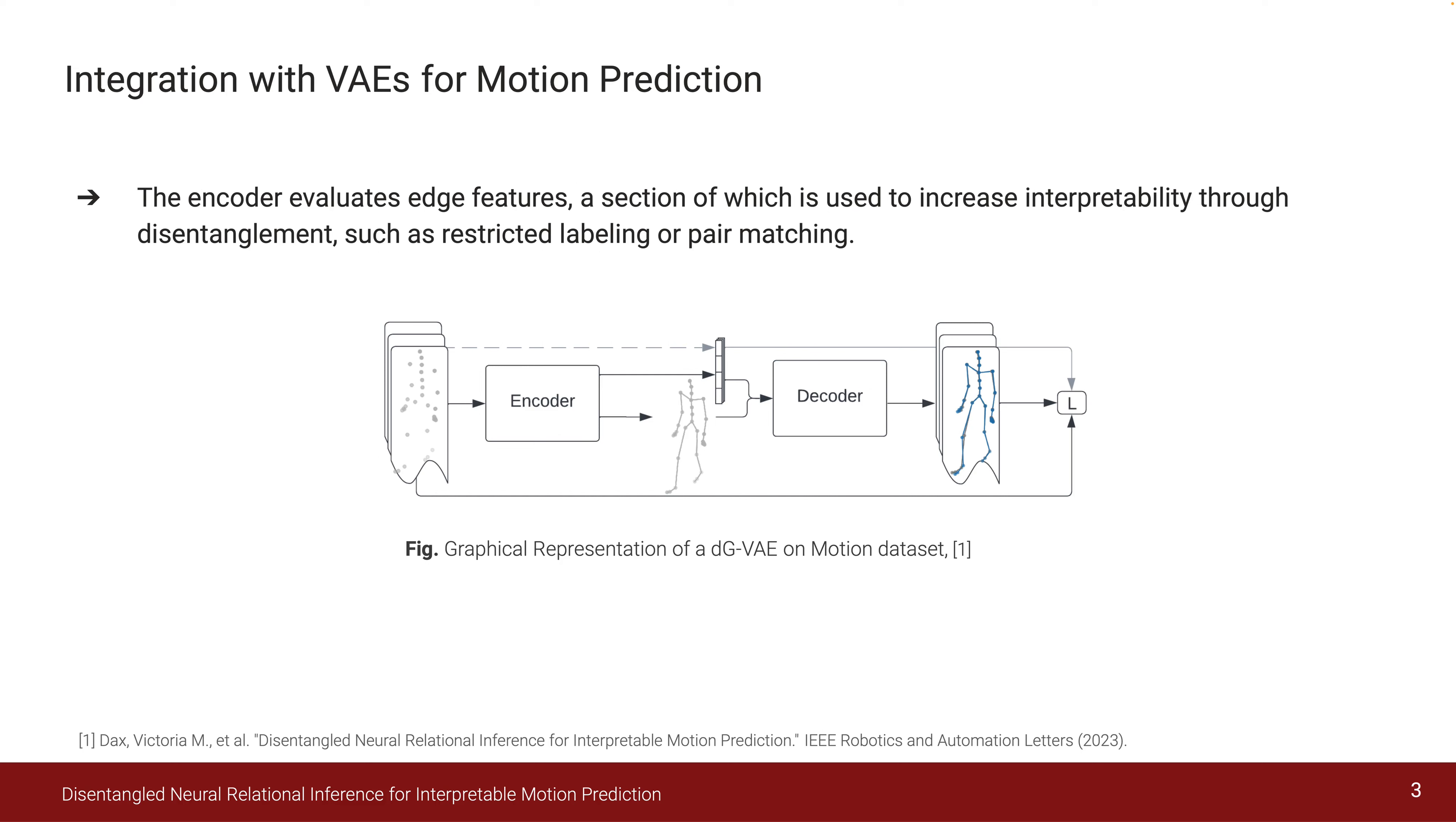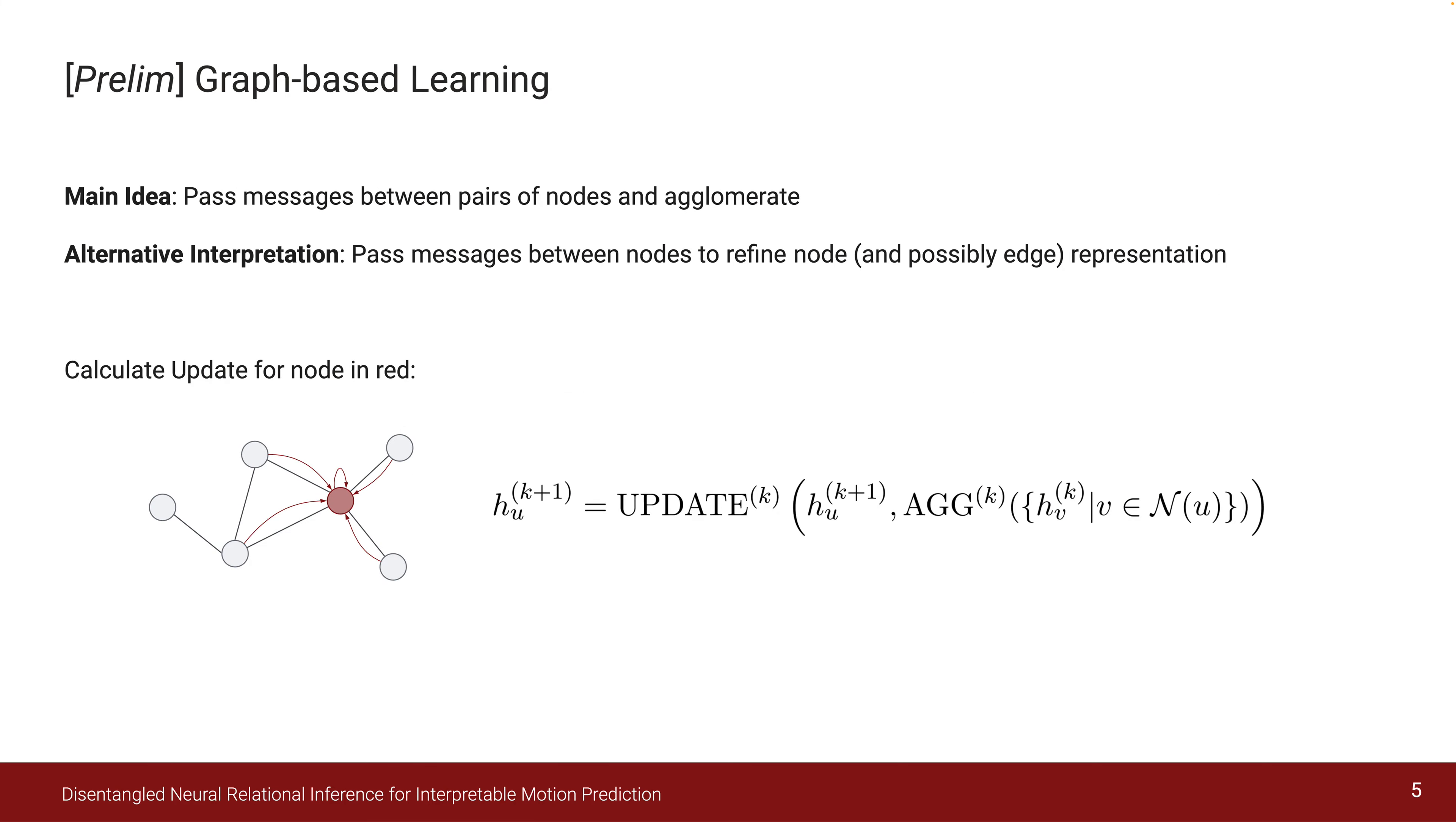It is a variational autoencoder framework that integrates graph-based representations and time series models to efficiently capture spatial-temporal relations between interactive agents. This work is devoted to enhancing prediction model interpretability and out-of-distribution generalizability.